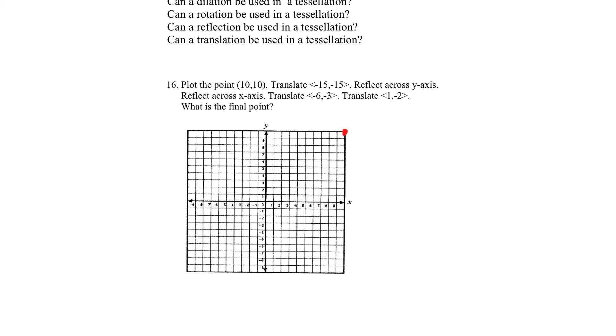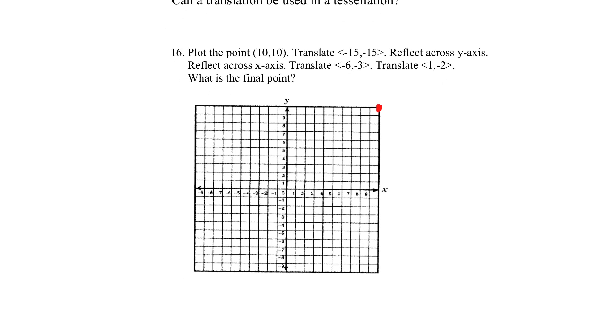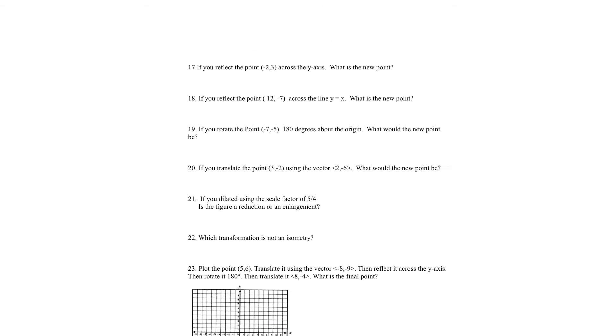Okay. Let's look at this one. So we start at 10, 10. We translate negative 15, negative 15. That's left 15, down 15. That's going to put us right here. Negative five, negative five. So we got that. Reflect over the Y. That's going to put us right here. Reflect over the X. That's going to put us right here. Translate negative one, two, three, four, five, six. One, two, three. And then translate over one, down two. So where does that put us at? At zero, zero.